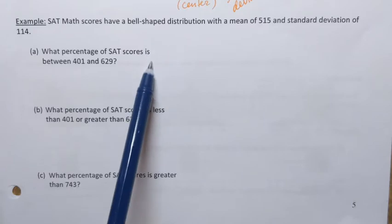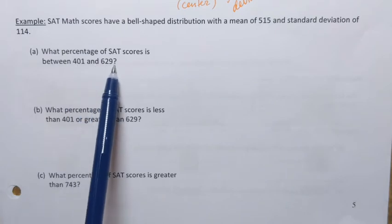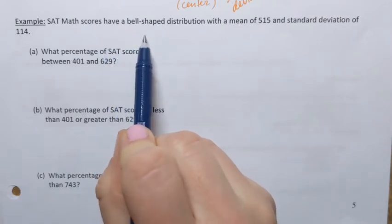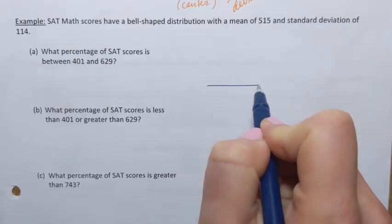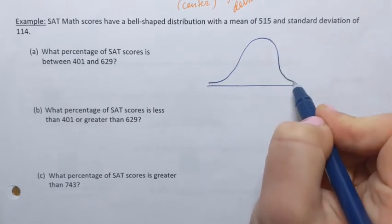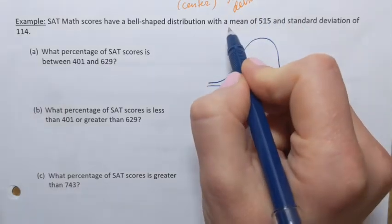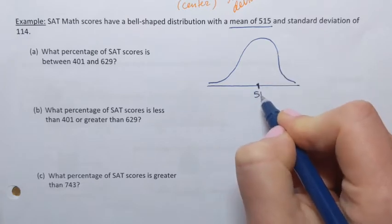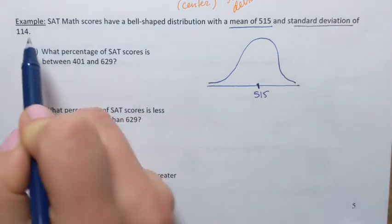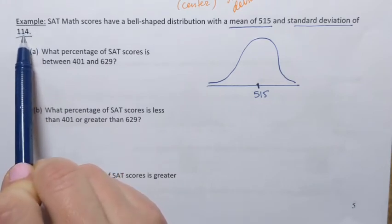The first question asks: what percentage of SAT scores is between 401 and 629 points? Since the scores have a bell-shaped distribution, I can sketch it. The mean of 515 is right in the middle, since a normal distribution is symmetric. The standard deviation is 114, and remember, standard deviation measures the spread — the higher it is, the larger the spread.